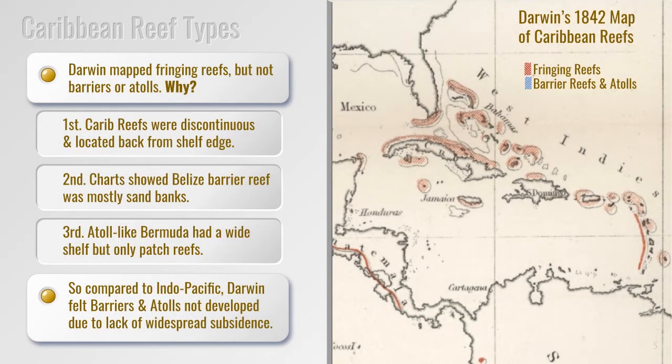After identifying the three reef stages around the Indian and Pacific Oceans, Darwin turned his attention to the Caribbean where unfortunately things didn't go as well. On his 1842 reef map he was only able to identify the fringing reef stage and marked neither barrier reefs nor atolls. His reason was that Caribbean reefs looked different from those in the Indo-Pacific. Those that looked most like barriers, such as in Belize, were composed mostly of sandbanks, whereas those that looked most like atolls, such as Bermuda, were encircled only by patch reefs. It seemed to him that Caribbean reefs were less well developed, probably stemming from the lack of widespread subsidence in the area.